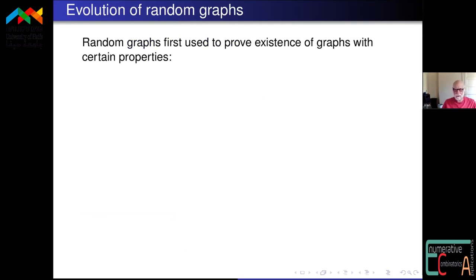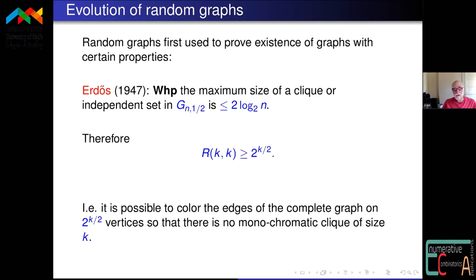Where did random graphs come from? It starts with Paul Erdős, who first used them to prove the existence of graphs with certain properties. In 1947, he showed that in the random graph G(n, 1/2), the maximum size of a clique or independent set is at most 2 log n. From that he proved a lower bound on the Ramsey number R(k,k): it's possible to color the edges of a complete graph on 2^(k/2) vertices so there is no monochromatic clique of size k. That lower bound essentially hasn't moved much.